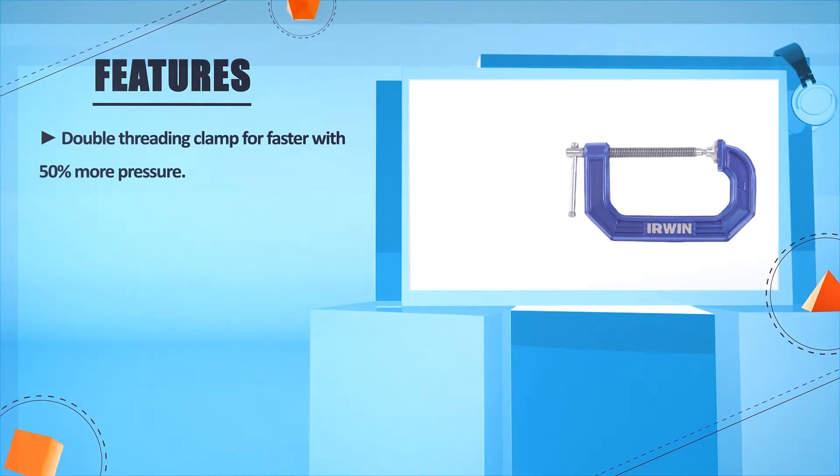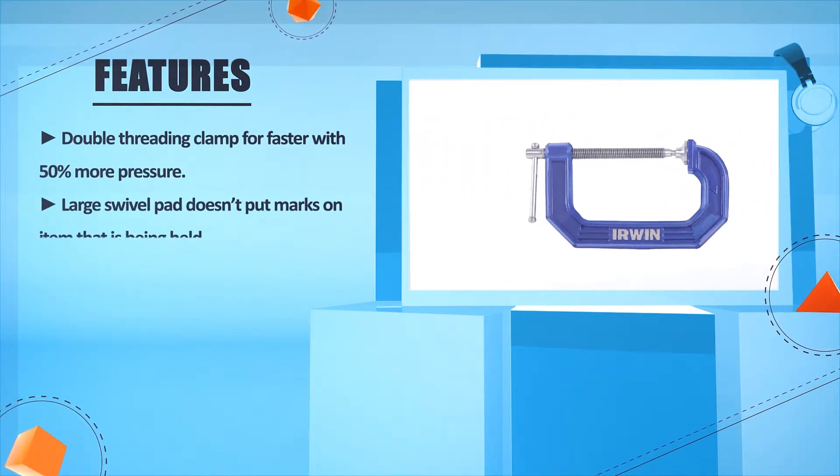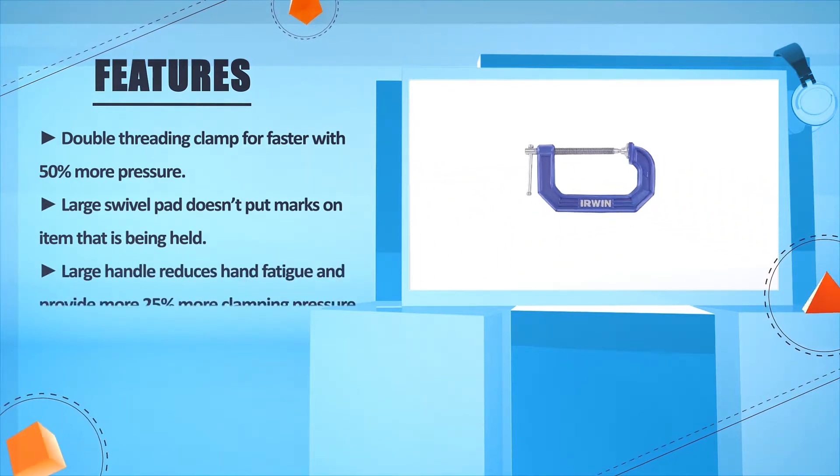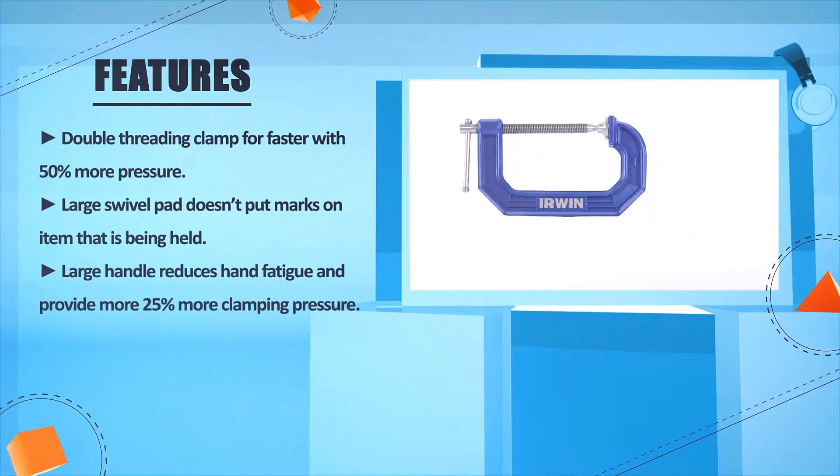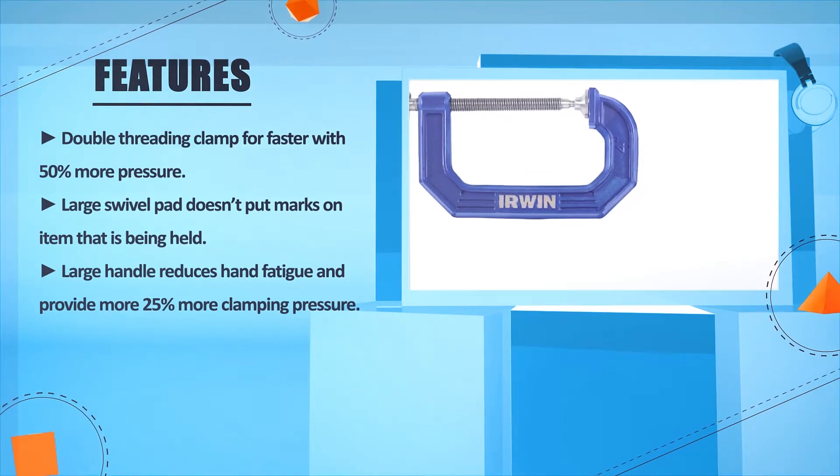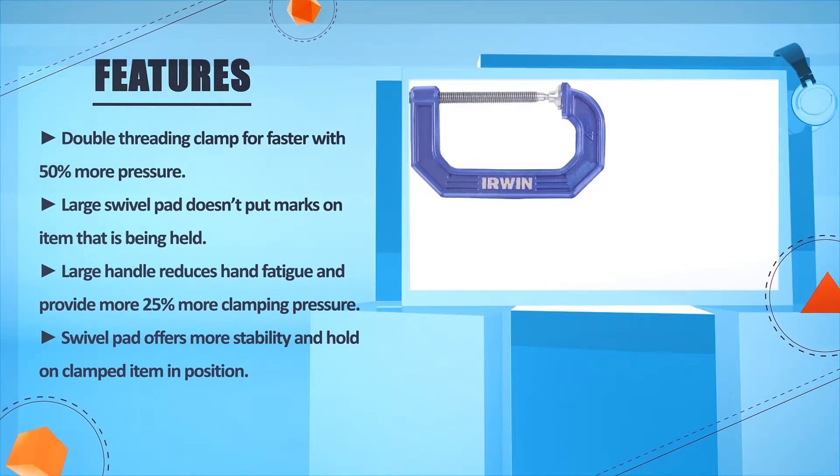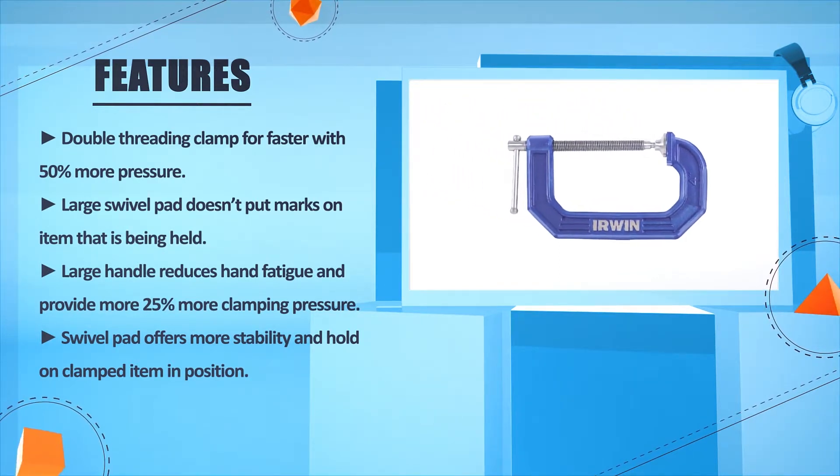Double threading clamp for faster with 50% more pressure. Large swivel pad doesn't put marks on item that is being held. Large handle reduces hand fatigue and provide more 25% more clamping pressure. Swivel pad offers more stability and hold on clamped item in position.